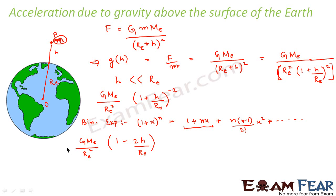Now as I already told you previously also, what is G M_e by r_e square? It is nothing but the value of acceleration due to gravity g on the surface of the earth. So this would be g into (1 - 2h by r_e). Now what is this? What were we calculating? We were calculating the value of g at a height h above the surface of the earth.